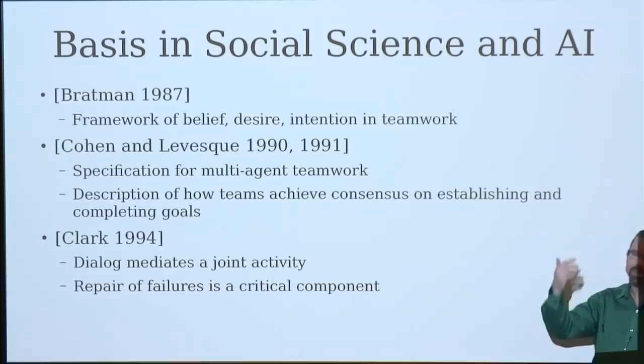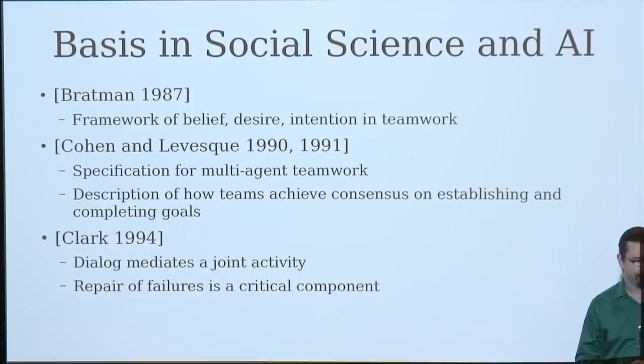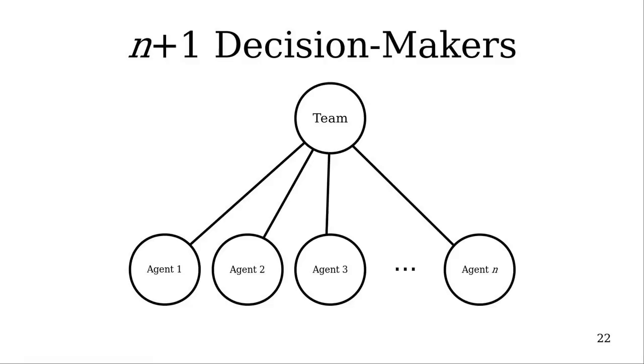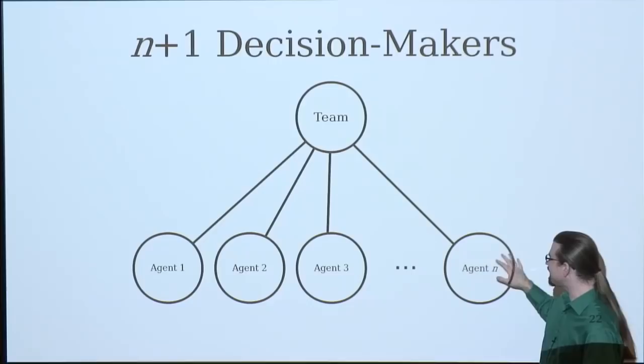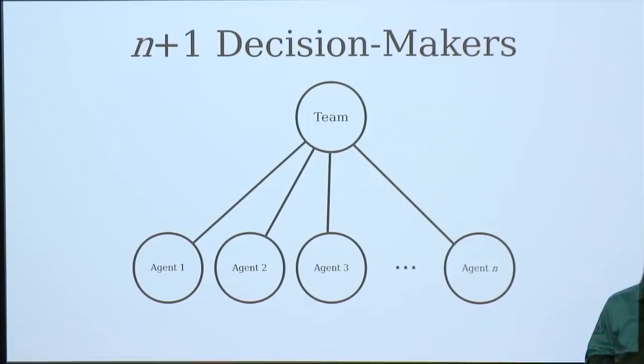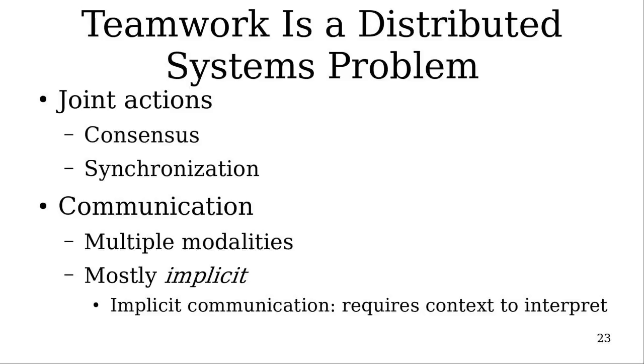So we can think about teamwork as you have N agents and N plus one decision makers, right? So the team really is its own entity, but it's a synthetic entity that somehow has to get produced by actions from the individual members. In teamwork, you can think of it as a distributed systems problem. So I mentioned already that there's these joint actions that the team has to take in terms of forming consensus and synchronizing the timing of events.